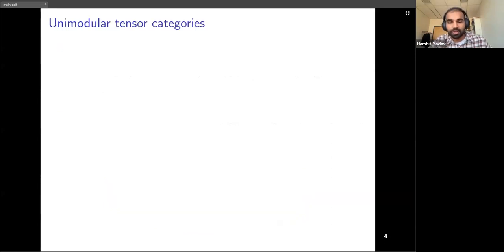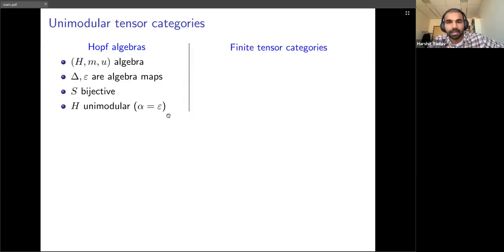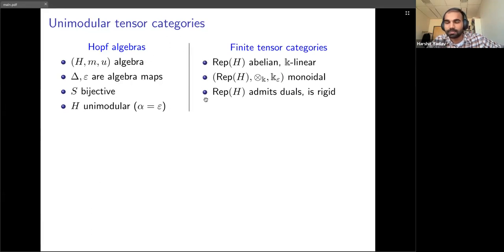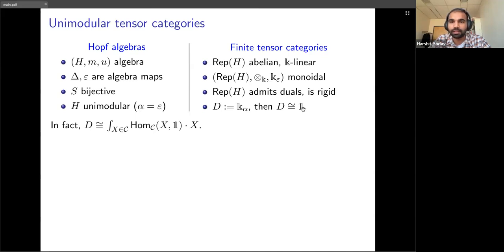How do we define unimodularity of tensor categories? Again, unimodularity of a Hopf algebra is characterized by the distinguished character alpha being equal to epsilon. The structure of a Hopf algebra gives us a monoidal category. To define unimodularity for tensor categories, we use the element alpha to give the one-dimensional vector space k the structure of an H-module, where the action comes from alpha. The condition alpha = epsilon then translates to the condition that this object D is isomorphic to the unit object.